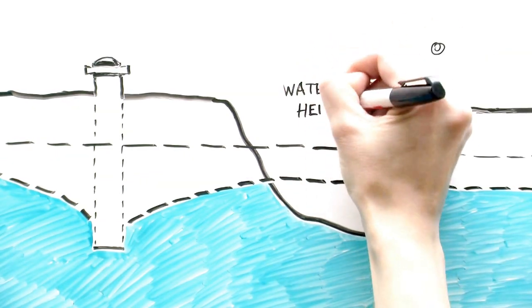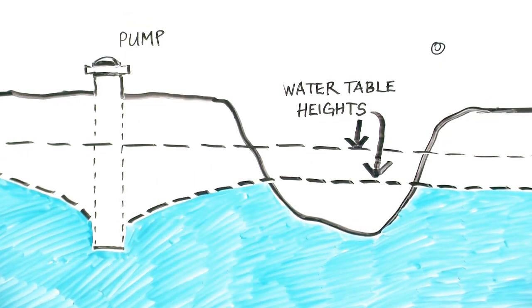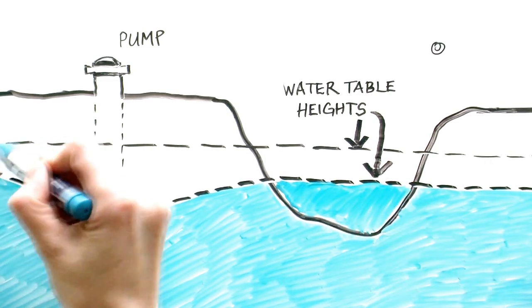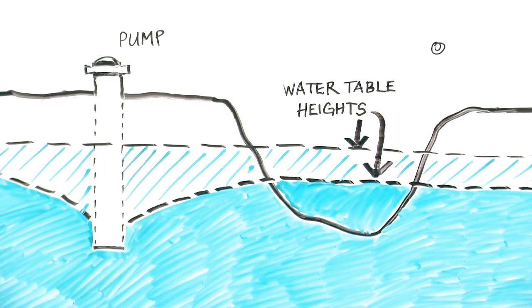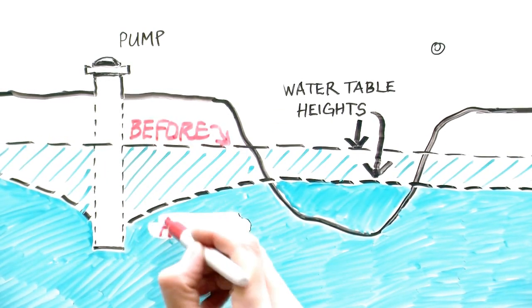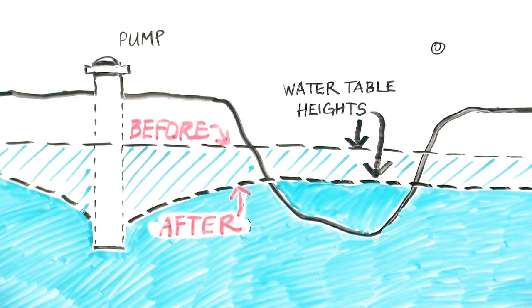If too much groundwater is extracted or if water is prevented from entering the ground to become groundwater, the water table can be lowered so much that it affects the levels of streams and lakes. This can then have an effect on the plants, fish, and other animals that live in these areas.